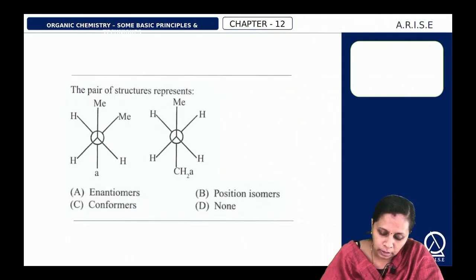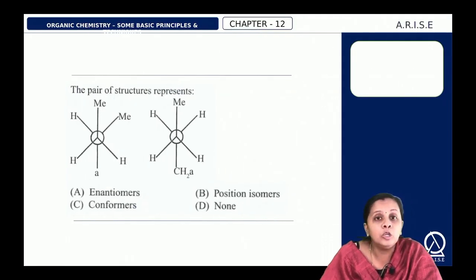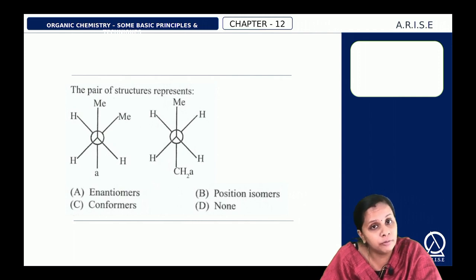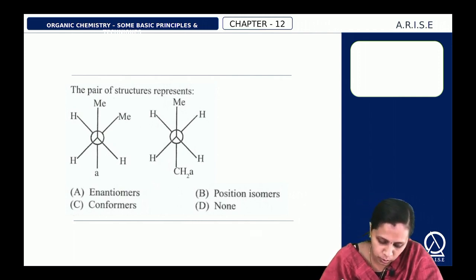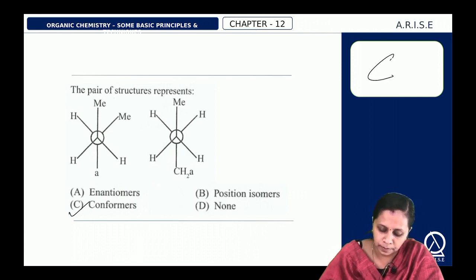The next question: the pair of structures represents conformational isomers shown via Newman projection formula. So the answer is option C.